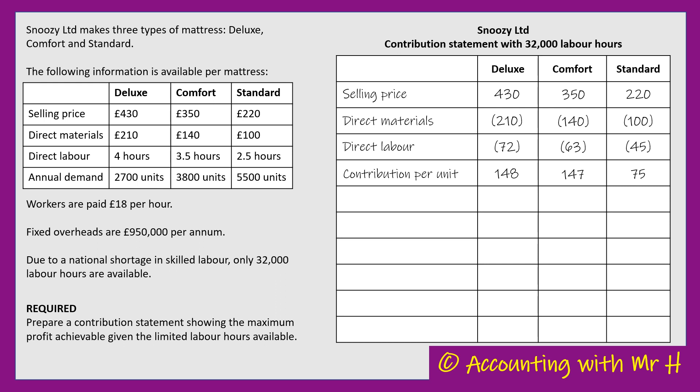When working out the optimum use of scarce resources, you start by finding the contribution per unit like we've just done. Then we're going to look at whatever the scarce resource is - the limiting factor - in this case labour hours. I've added another row: labour hours per unit. In a different question that could be machine hours or materials in kilograms - maybe the material is limited, maybe they can't get enough supply of something.